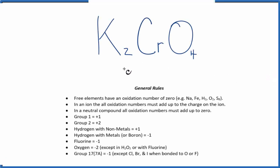In this video, we'll find the oxidation numbers for each atom here in K2CrO4, potassium chromate. These general rules will help us find the oxidation numbers.